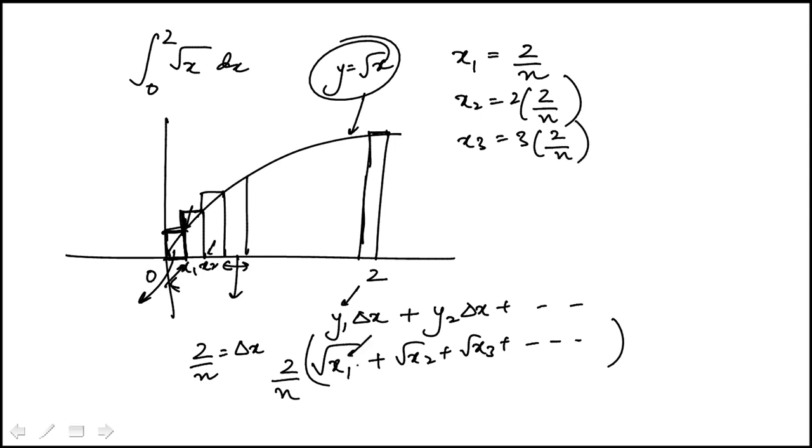And what we have to do is to replace it here. And I'm just going to write the first few. So it's going to be root of 2 over n plus square root of 2 times 2 over n plus square root of 3 times 2 over n. And you're going to start to see the pattern.